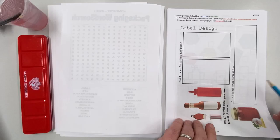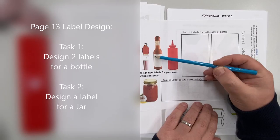Let me just turn the page around for you. So this bottle has a label on this side of it, and then if you turn the bottle around you'll have a label on the other side. So I want you to draw two labels, design two labels for both sides of the bottle. It could be for a sauce.